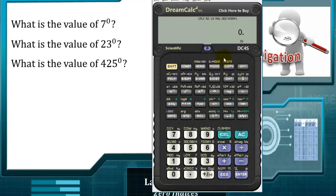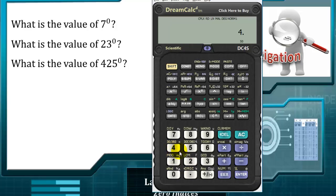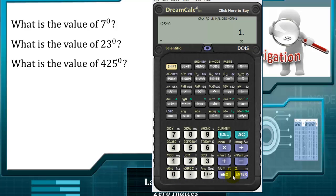I have a calculator here which resembles the Casio model. For the first question, 7 to the power of zero — we will get 1. For 23 to the power of zero, we have 1 as well. For 425 to the power of zero, we will have 1. Now, we choose any value and let it have the power of zero, and we have 1.